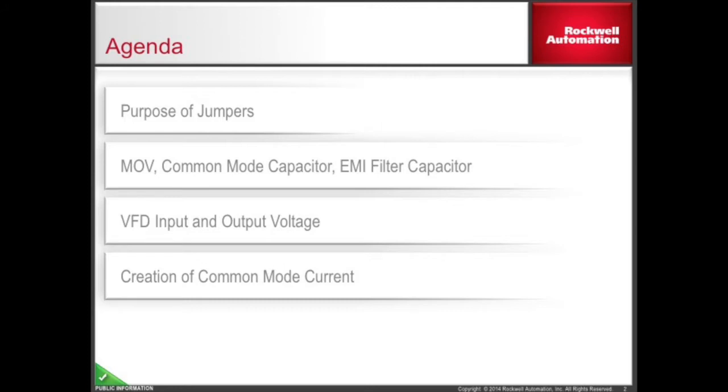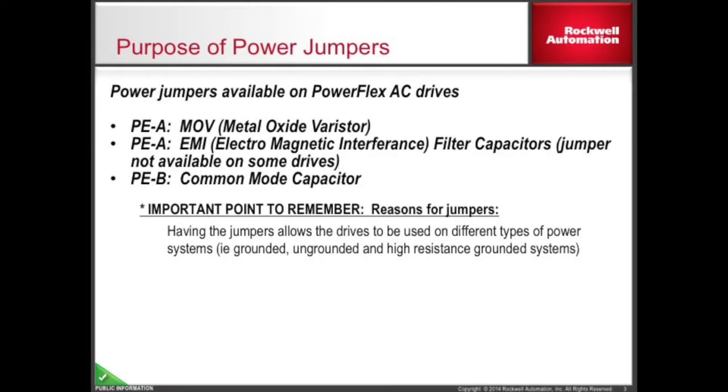A link is provided in the description, which provides documentation showing all of the PowerFlex 750 drives, their frame sizes, and jumper locations. All of the PowerFlex 7-class drives are provided with power jumpers. Having these jumpers allows the drives to be installed on any three-phase AC power system. Installation of the jumpers provides a path to ground for their associated device.